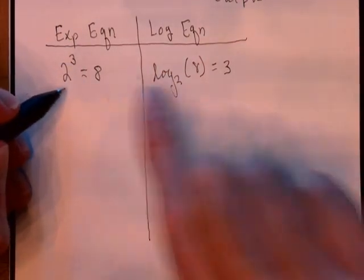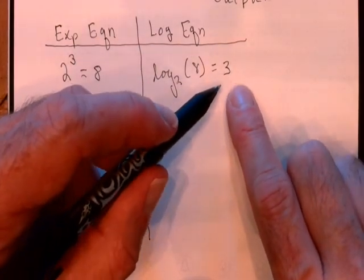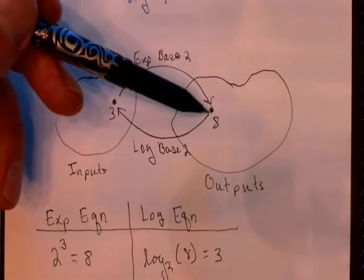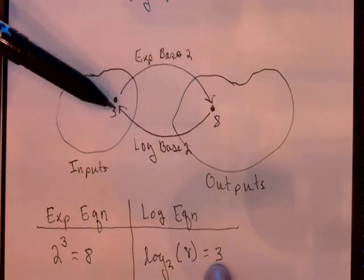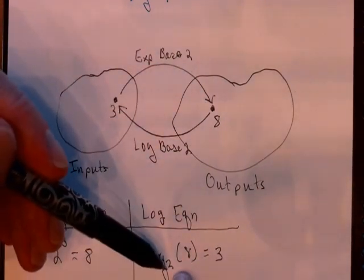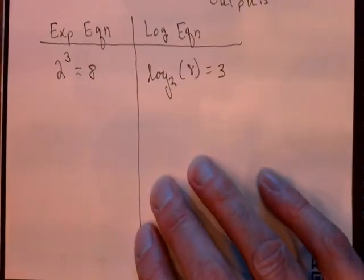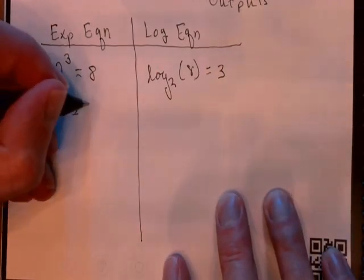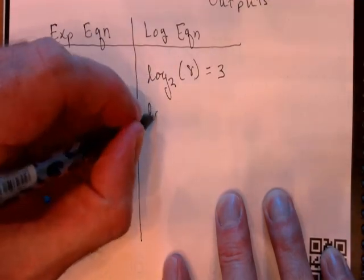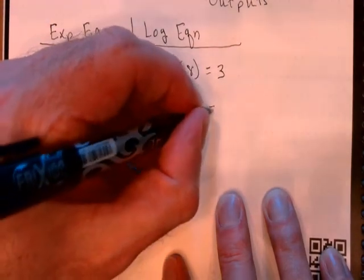The equivalent log equation is log base 2 of 8 equals 3. So here's your exponential equation, here's your log equation. Notice, the log is telling you the exponent to use. And that's consistent with this diagram up here. The log base 2 function takes 8 as the input and gives you 3 as the output, letting you know if you want to raise 2 to a power and get 8, the power you need to use is 3. Let's do a couple of other conversions here.